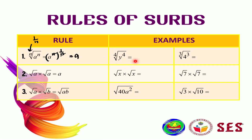For example, here it's the fourth root of y to the power of 4. Since the root is equal to its power, these two can cancel out to be just y. I'll leave the second example here for you to try yourself.